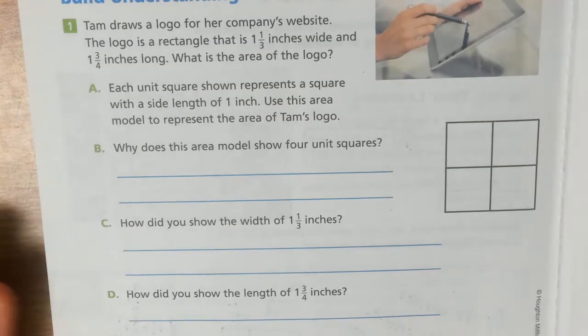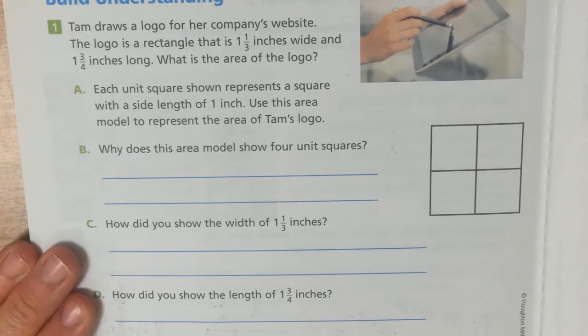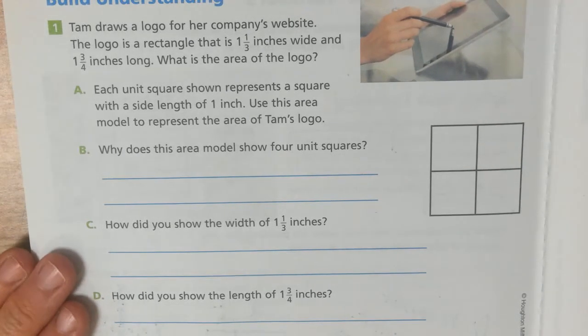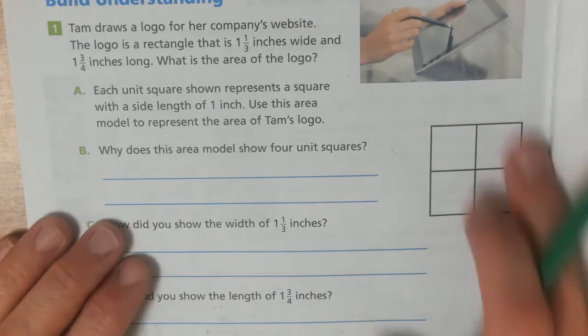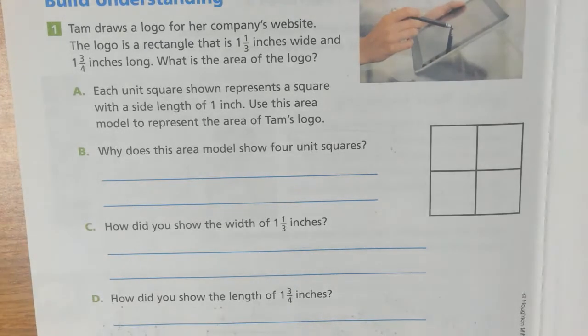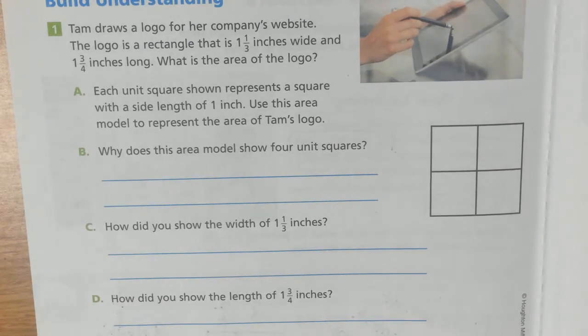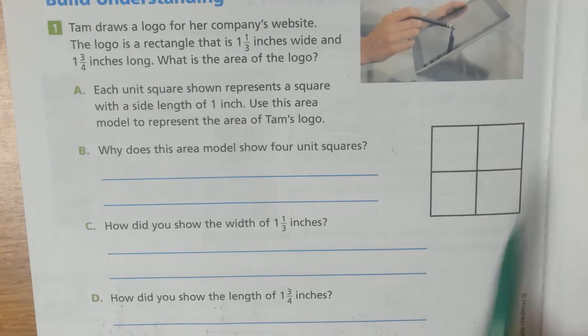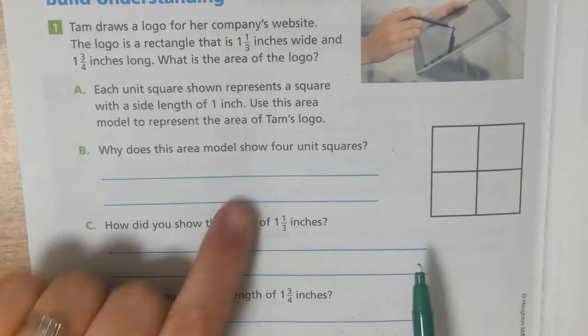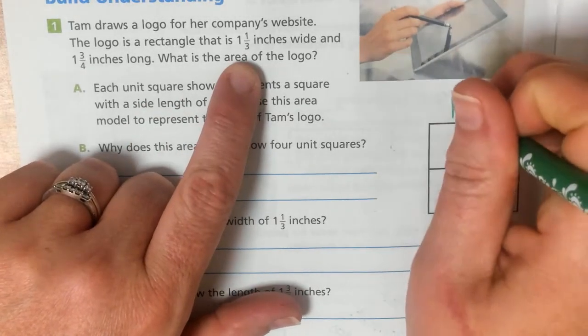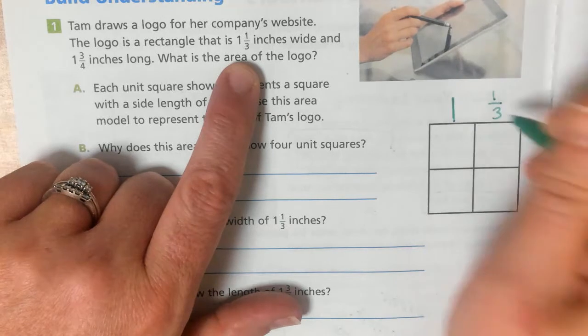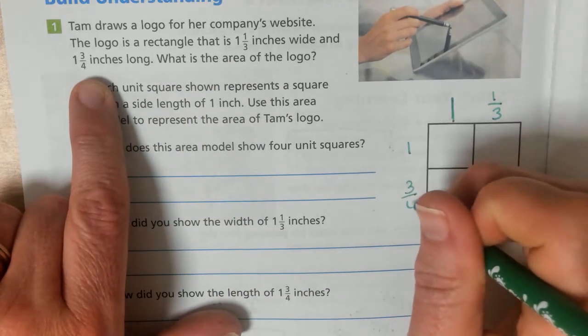All right. Tam draws a logo for her company's website. The logo is a rectangle that is 1 and 1/3 inches wide and 1 and 3/4 inches long. What is the area of the logo? So, they gave us a rectangle. They didn't break it up like we would normally break it up. They were just doing 4 unit squares in here. But, we're going to take our 1 and 1/3, put it along one side. 1 and 3/4, put it along the other.